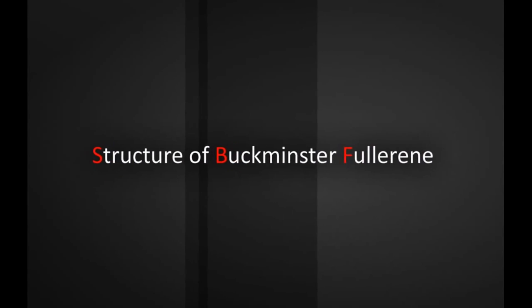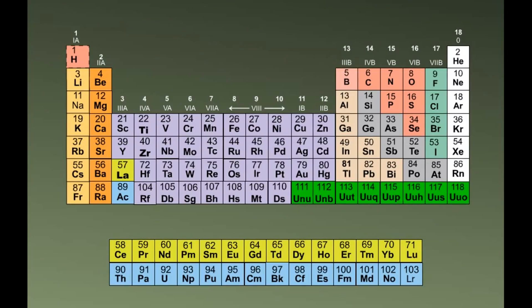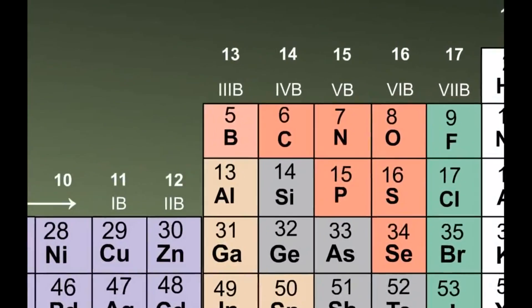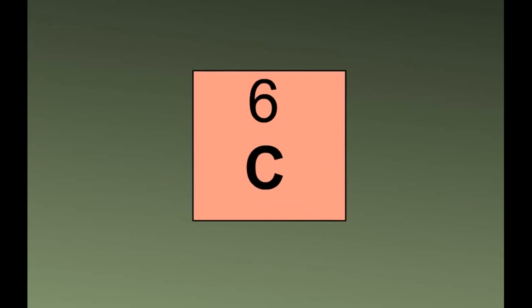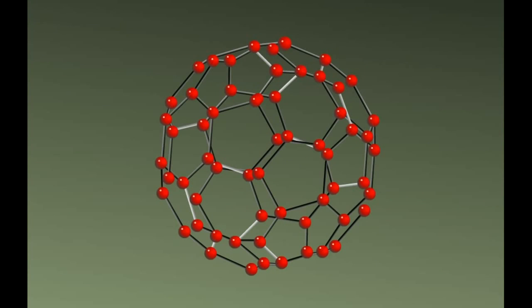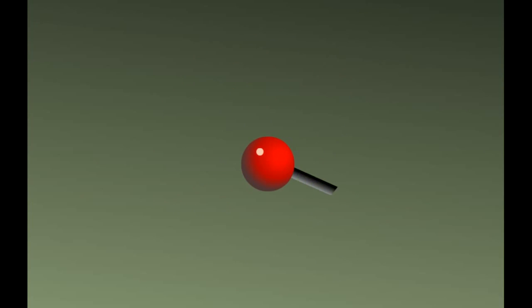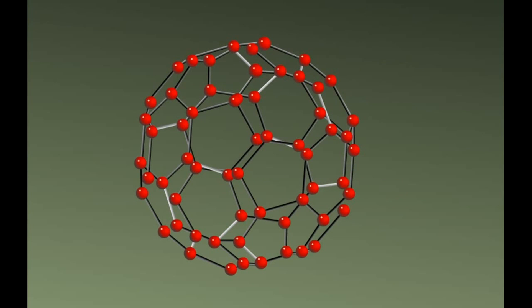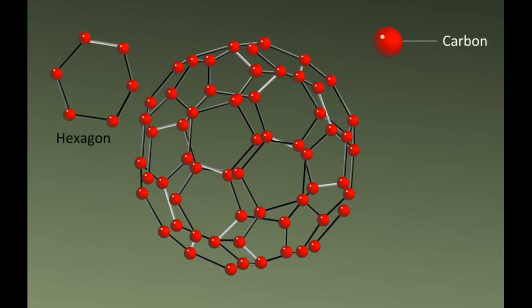Carbon is one of the most important and unique non-metals, represented by the symbol C, with atomic number 6. Buckminster Fullerene is an important allotrope of carbon in which carbon atoms are held together by covalent bonds, forming a cage-like structure in which 60 carbon atoms are arranged in the form of a spherical ball. It is also known as Bucky Balls or C60. The structure has 20 hexagons and 12 pentagons, just like a football.